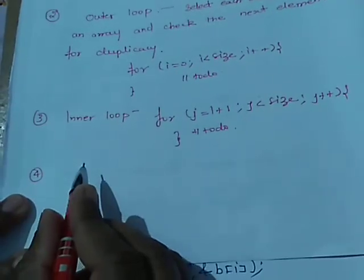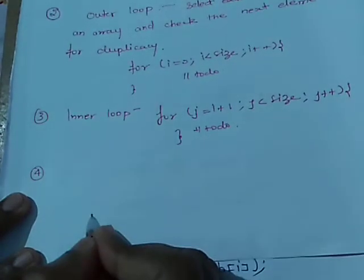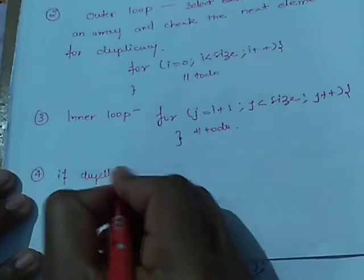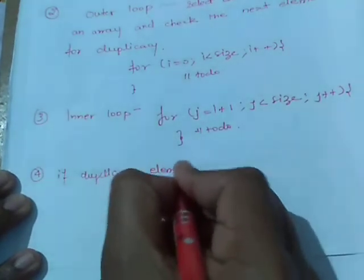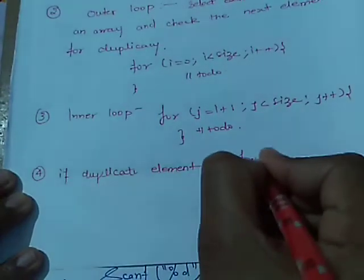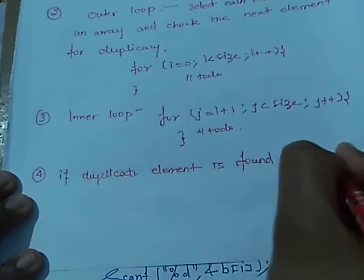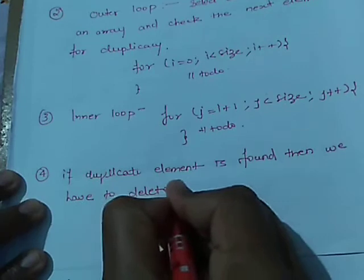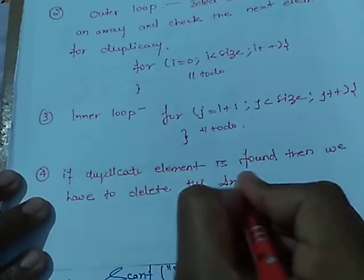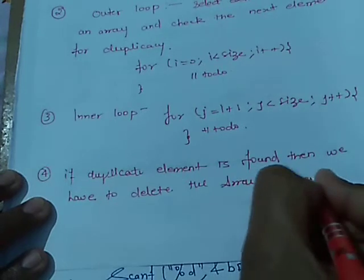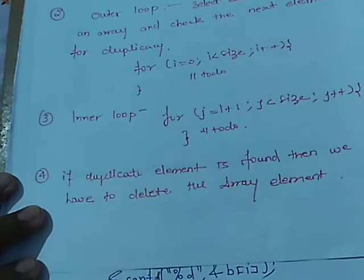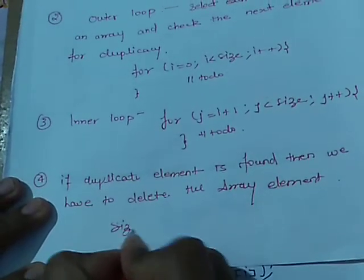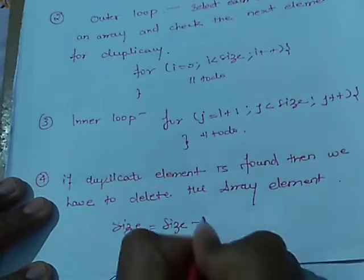Inside the inner loop we have to check for a duplicate element. If a duplicate element is found, then we have to delete that array element and also decrement the size of the array, so the new size is given by size minus one.